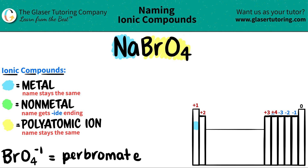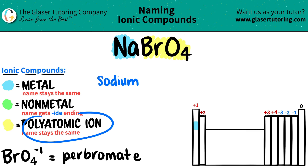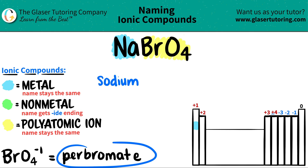Now we're ready to name. The metal name comes first, and that name always stays the same. So Na is just sodium — you don't have to do anything with that name. And then the polyatomic name always stays the same, so that's why you have to memorize them. This is perbromate, so I'm just going to write perbromate.